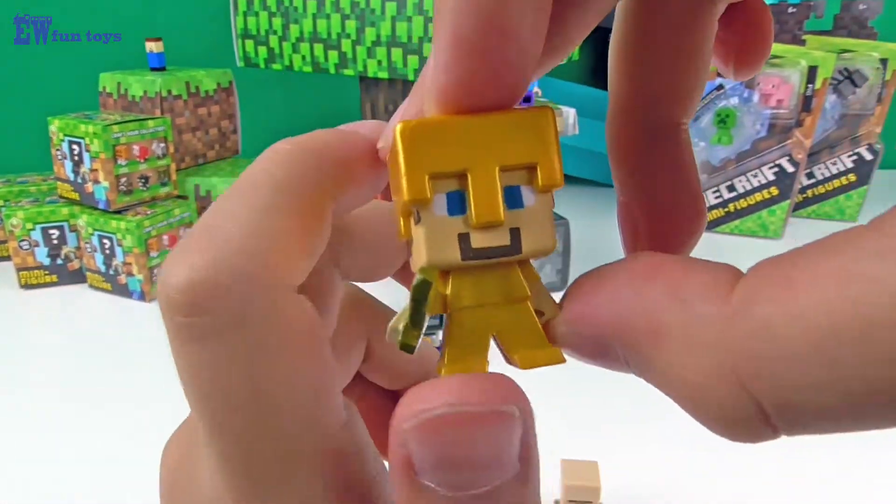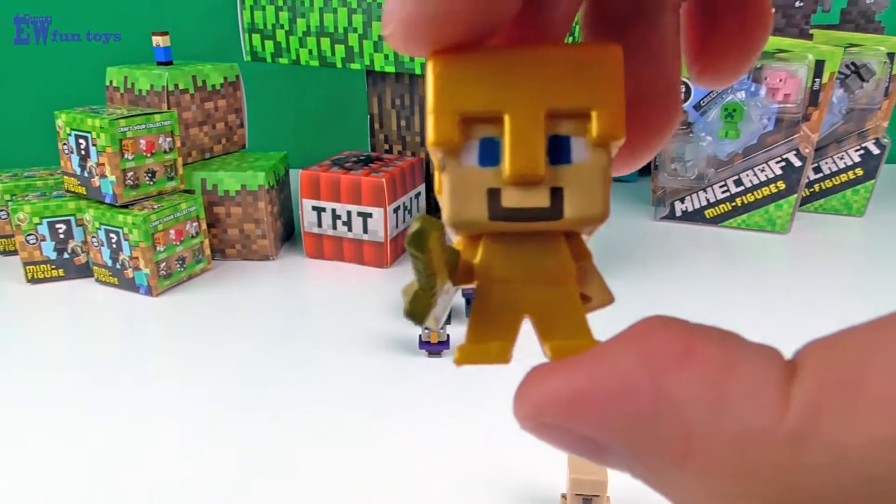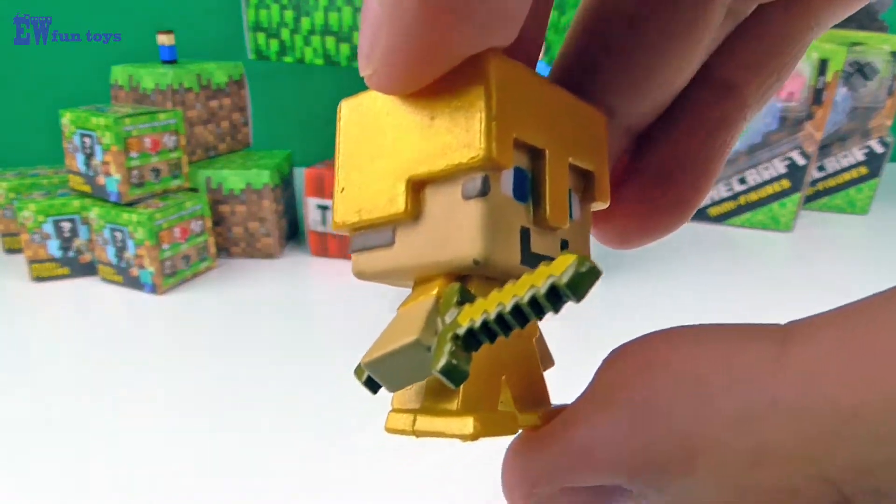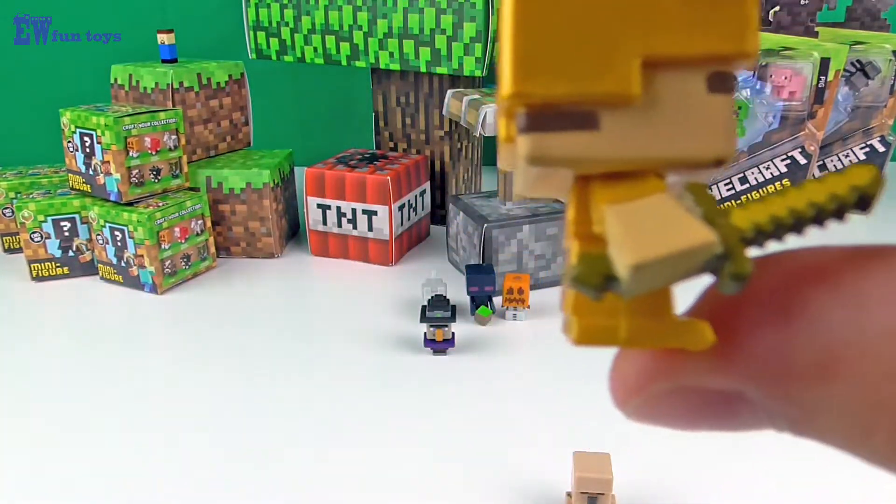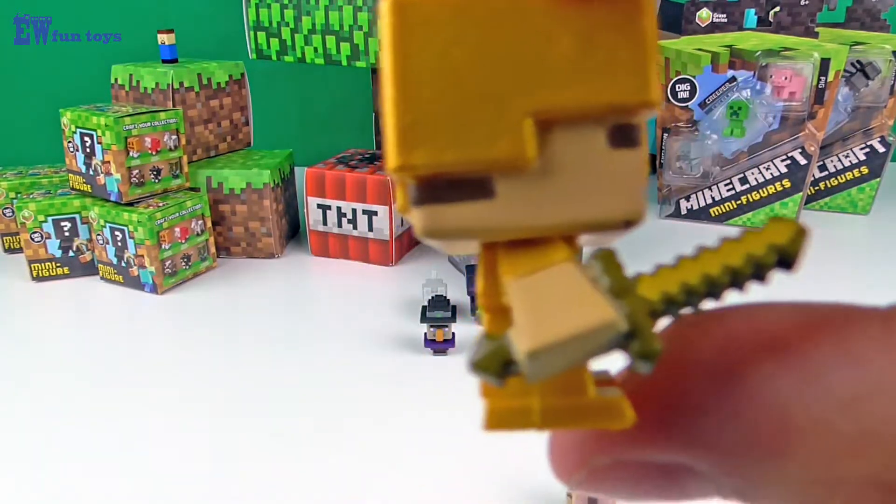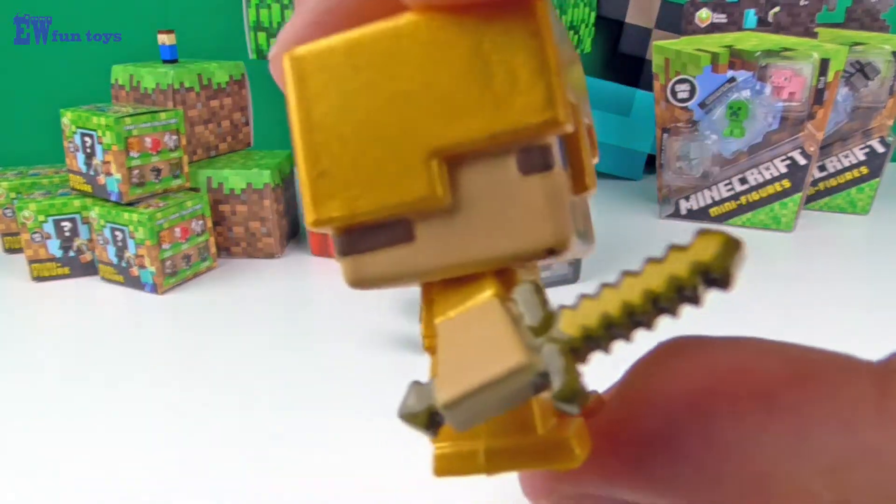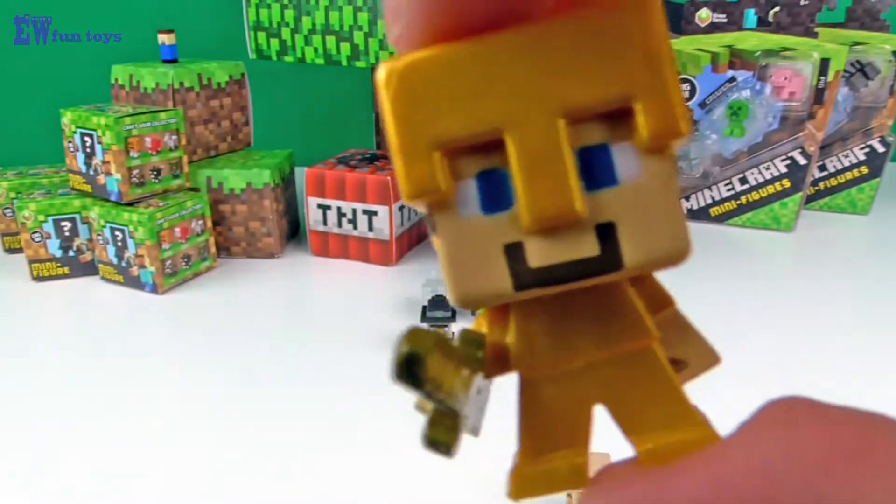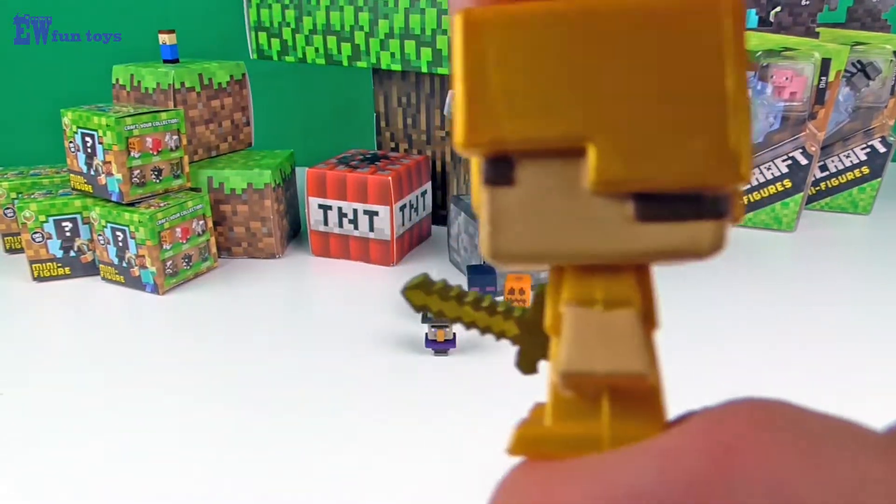Steve with Gold Armor. This gold armor is better than leather armor but weaker than iron armor. He also has a gold sword. Gold is easiest to enchant. Looks like he's ready to battle.